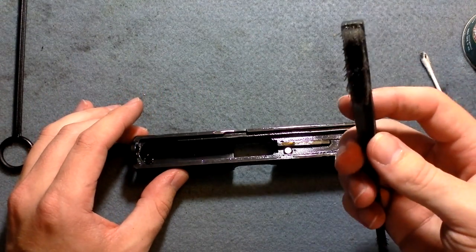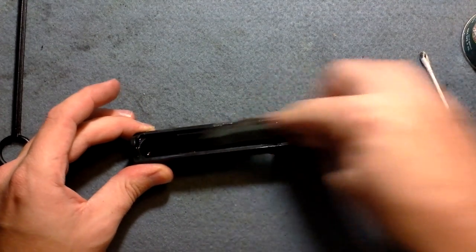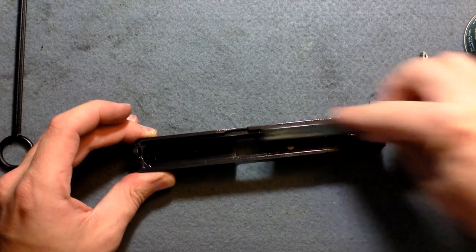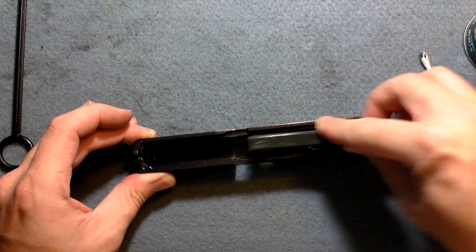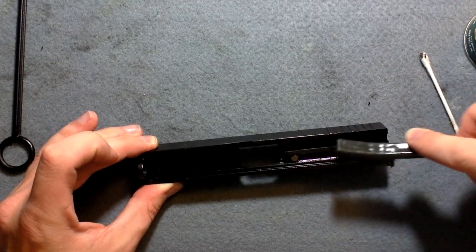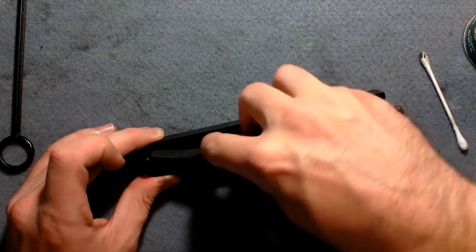You want to take your nylon brush and brush down the slide rail here. Brush down pretty much everything. That Ballistol at this point is pretty well absorbed in. And it has done its job in cleaning.